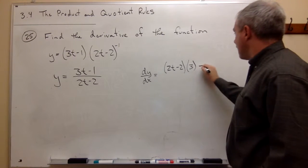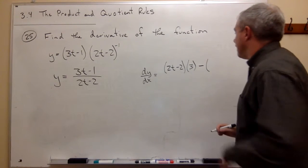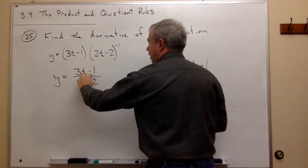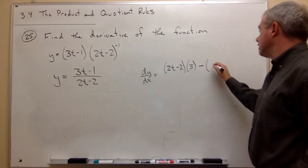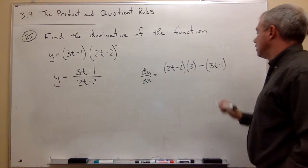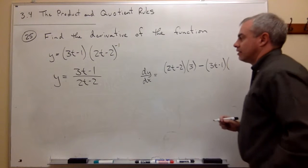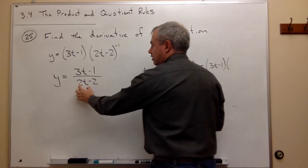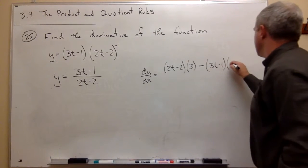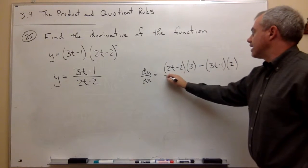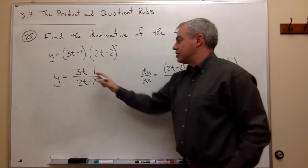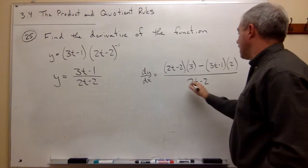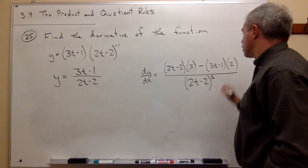Then I have a minus sign, and then I get what's on top multiplied by the derivative of the bottom. So what's on top is 3t minus 1, multiplied by the derivative of what's on the bottom. And the derivative of the bottom is 2. And then that's all divided by the bottom, which is 2t minus 2. But we have to remember to square it.